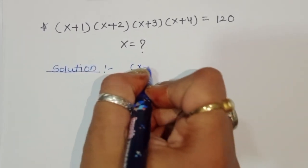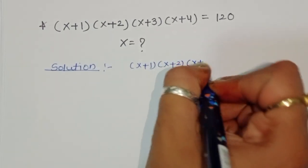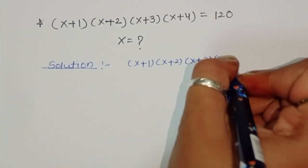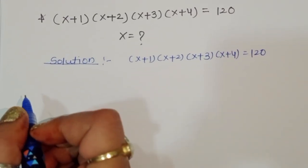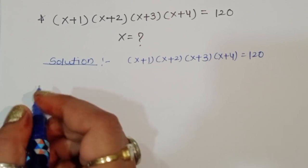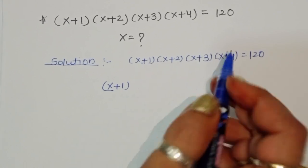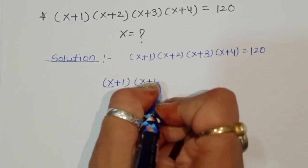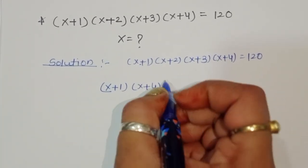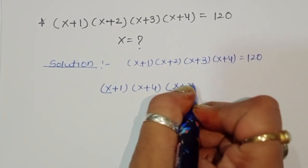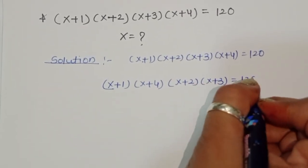So (x+1)(x+2)(x+3)(x+4) = 120. We rearrange the terms as (x+1)(x+4) times (x+2)(x+3) = 120.